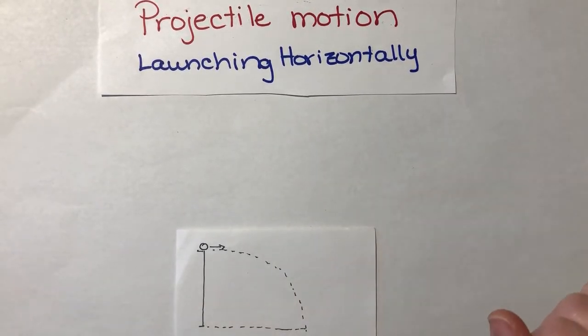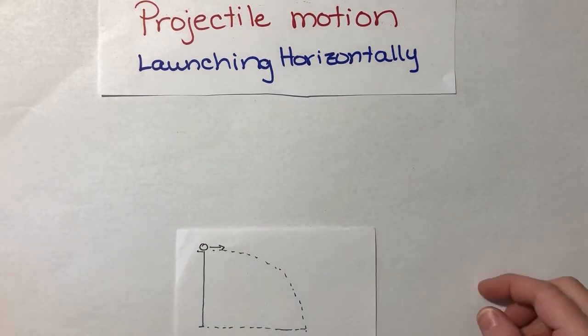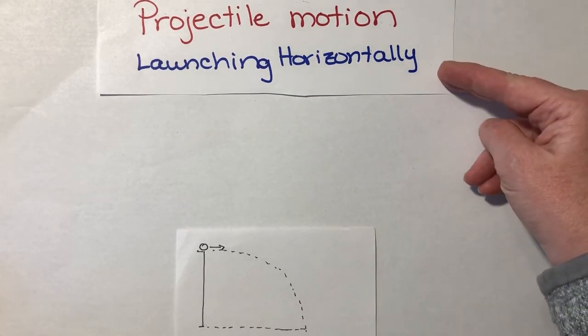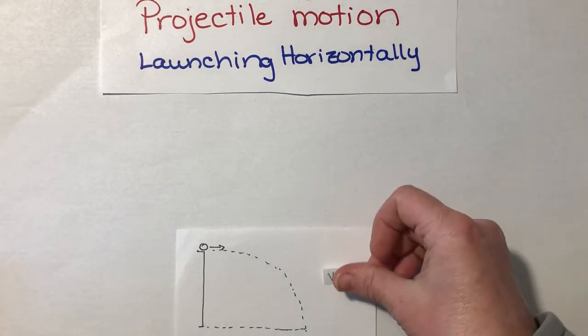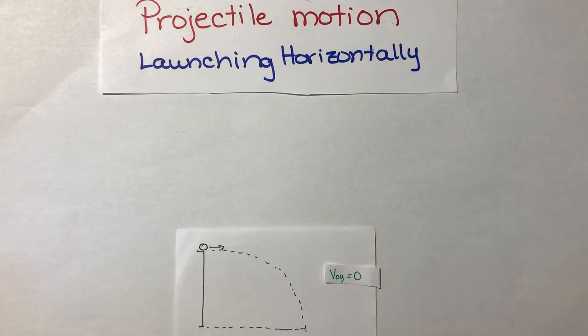Hi physics class, this is Mrs. Kraki. We're talking about projectile motion this week. For the purposes of this video and the two that follow it, we're talking about horizontally launched projectiles. What that means is that the projectile is only launched with a horizontal initial velocity and that the initial velocity in the y direction is going to be zero. So I'm just going to write that right there. V0Y initial velocity in the y direction is going to be zero.